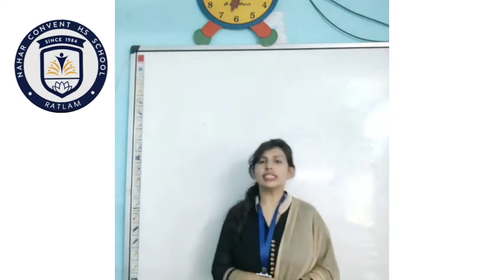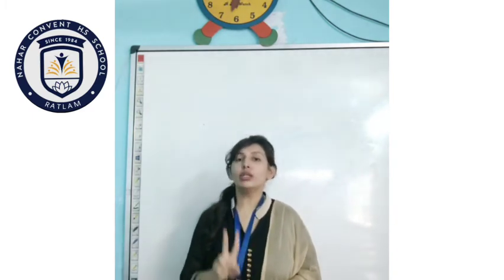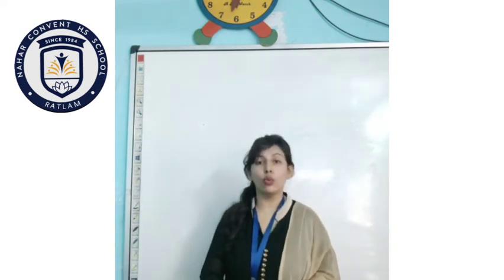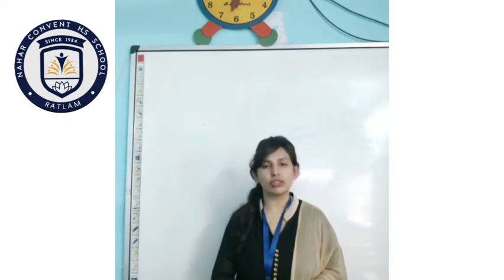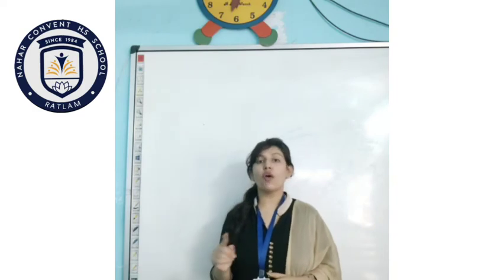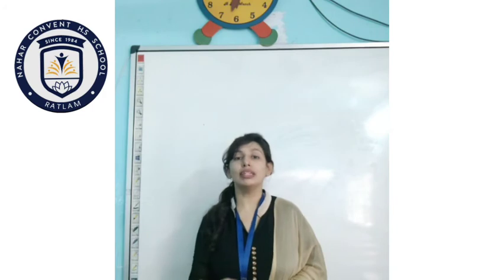Now the next one is relative pronoun. They are used for nouns which are previously mentioned in the sentence. Ye un nouns ke liye use kiya jaata hai jo sentence mein pehle se mentioned hain. Aur ye do sentences ko join karne ke liye bhi use kiya jaata hai. Iske examples hain: who, whom, which, whomsoever, etc. For example: 'The player who won the match worked hard.' Yahan 'who' player ke liye aaya hai — jo match jeeta, usne bahut mehnat ki thi.